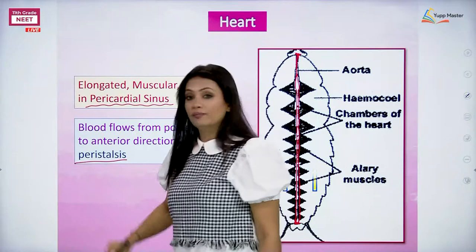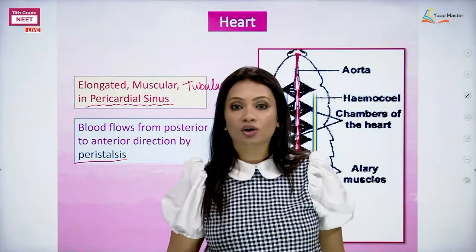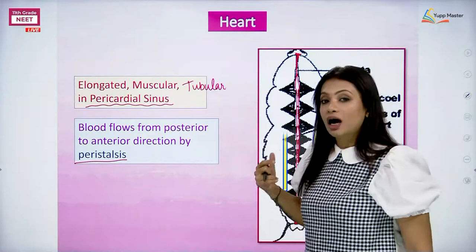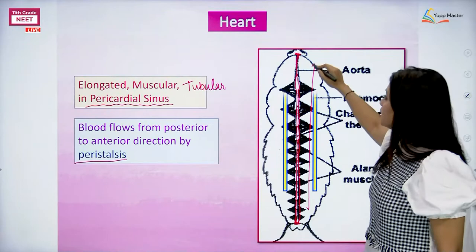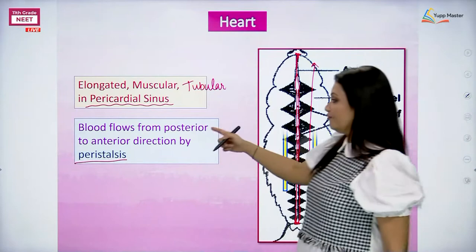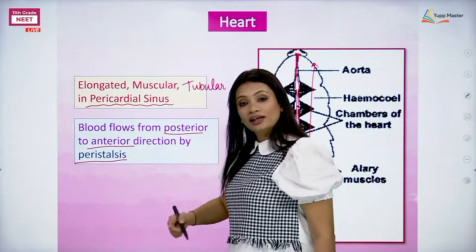In a tubular organ, alternate contractions and relaxations are called peristalsis. Here also, when talking about the blood and the heart of the cockroach, whenever it contracts so blood can flow, the contractions cause blood to flow from the posterior end till the anterior end and then circulate inside. Blood flows from posterior to anterior direction, and because contractions happen in a tubular organ, we call it peristalsis.